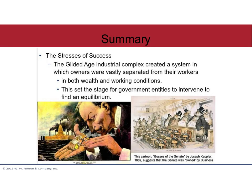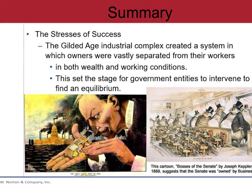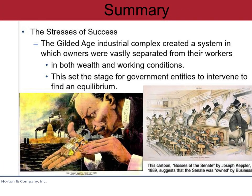To summarize: the Gilded Age created an industrial factory complex — a system where owners were now separate from workers. Previously they worked side by side; now you've got white-collar owners looking down at blue-collar workers doing the physical labor. This set up a 'them versus us' mentality. Political cartoons like the one showing Rockefeller controlling everything — all the oil and smoke in the background — set up the Gilded Age and explain why government regulation became inevitable.